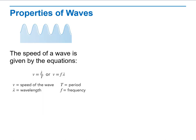Now, wave speed. We are discussing the properties of a wave. The speed of a wave is given by the equation v is equal to lambda over T, or v equals f times lambda.